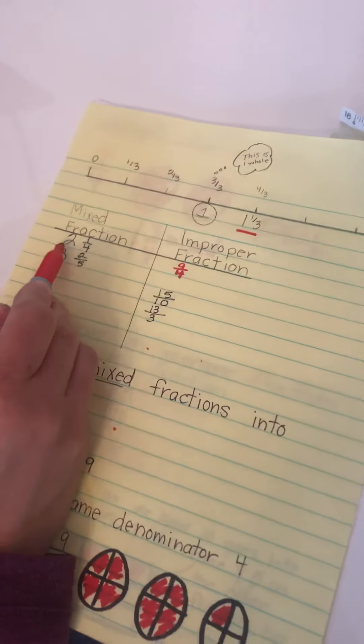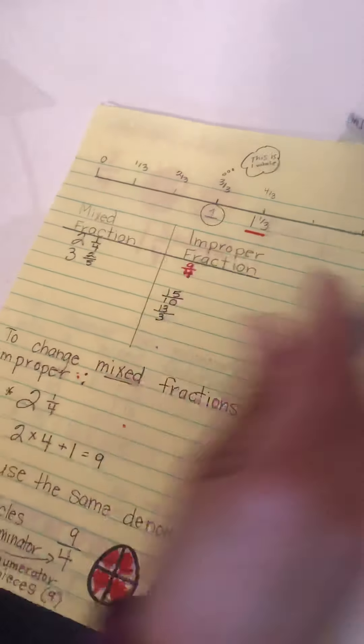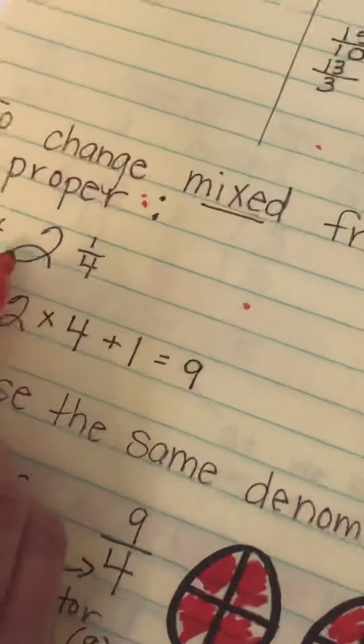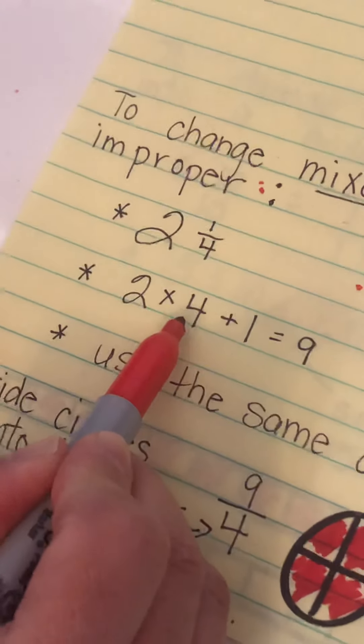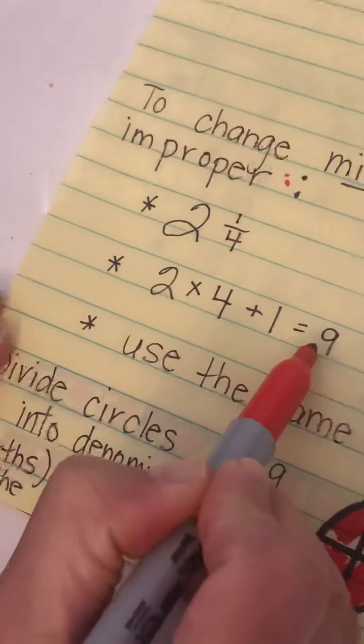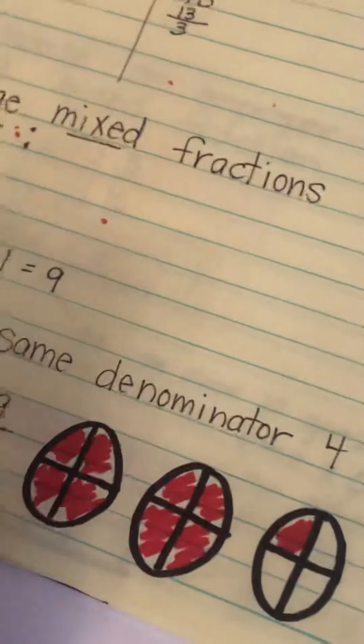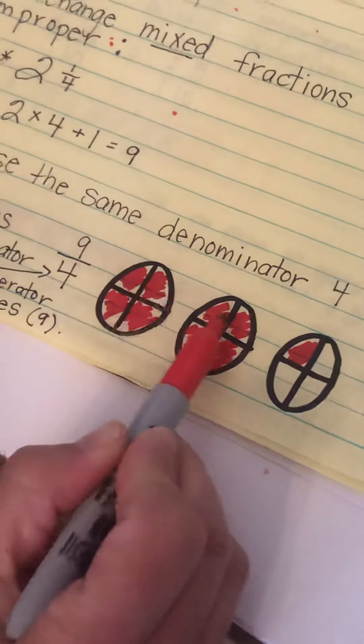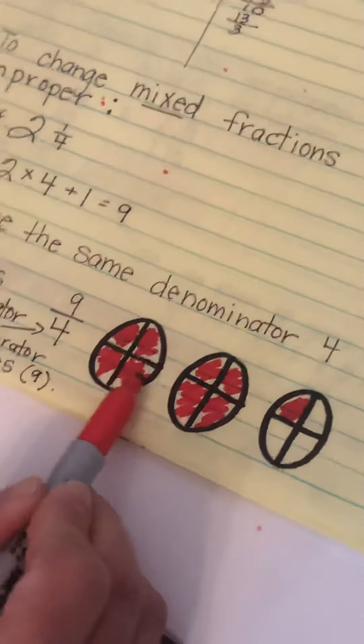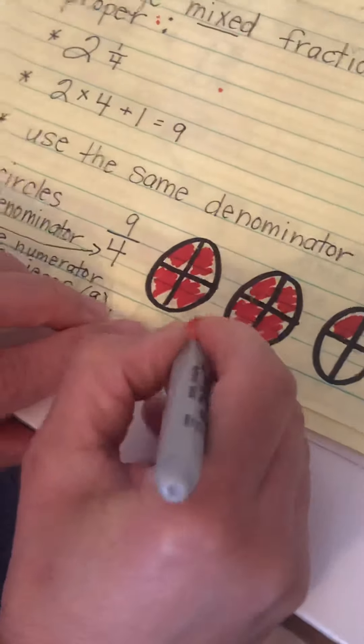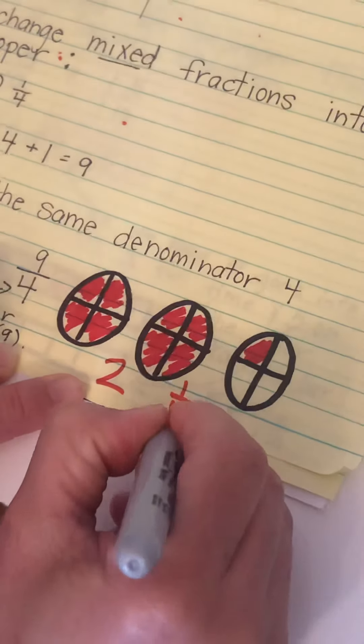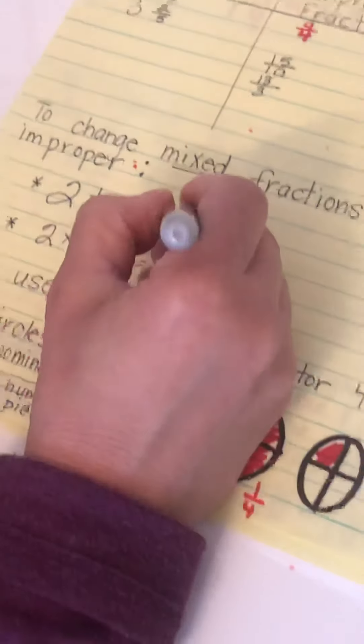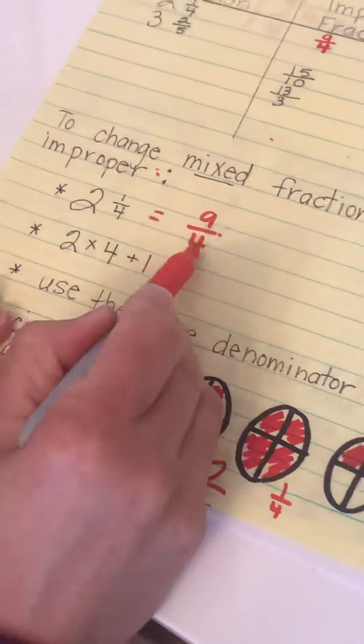So to do this mixed fraction, two and a quarter, they want you to change it into an improper fraction. You can do that the mathematical way that I showed you. Two and one quarter, so you can go two times four, that equals eight, plus the one equals nine. And then you always use the same denominator, four, so it'd be nine fourths. The visual representation of this would be you cut it into quarters, fourths, and it has nine pieces colored. So that'd be nine quarters, or two wholes and one quarter. It's the same thing. Two and a quarter is the exact same as nine quarters. One is mixed, one is improper.